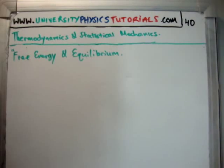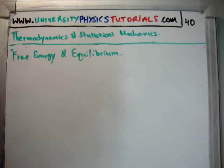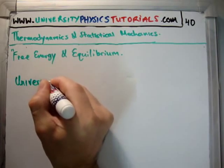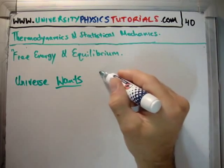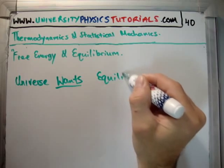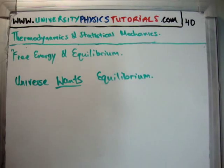So what are we trying to do here? We're trying to work out what do we need to do with the Gibbs and Helmholtz free energies in order to maximize the universe's entropy. The universe needs equilibrium. That's what drives most, if not all, of the situations in the universe — equilibrium. So we want equilibrium.